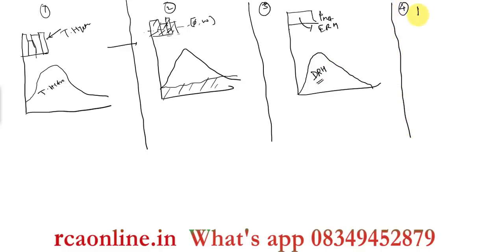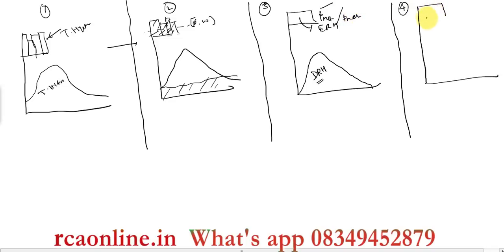In the final step, to get the unit hydrograph — which is obtained from 1 centimeter of effective rainfall — I divide P_net by P_net to get 1 centimeter. Since P_net gives the DRH, 1 centimeter gives DRH divided by P_net, and this resulting hydrograph is called the unit hydrograph.